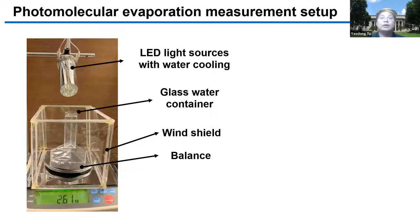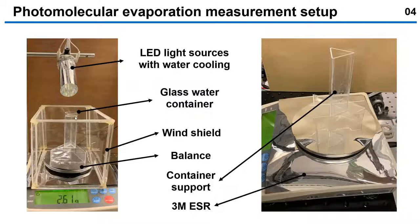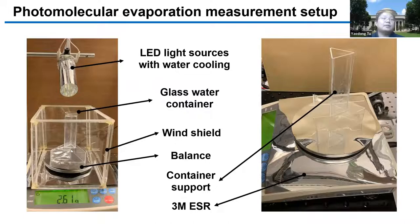First, we cover all the top surface of the balance with a highly reflective film, and we also fabricate a glass support structure to separate the water container from the balance. Of course, the glass does absorb the visible light. To reduce the data fluctuation of the balance, we put a transparent wind shield around the water sample. You can see the water chamber is not totally closed; its top is open.